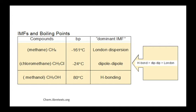Chloromethane has stronger forces — in addition to London dispersion forces, it has dipole-dipole forces, so its boiling point is higher than that of methane. Methanol has hydrogen bonding, which is an extreme version of dipole-dipole. The boiling point for methanol is much higher than that of the other two molecules.